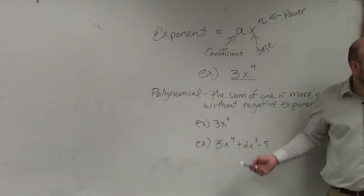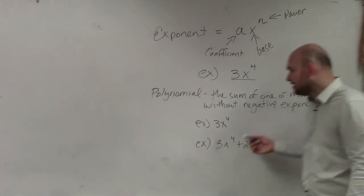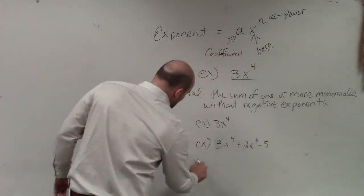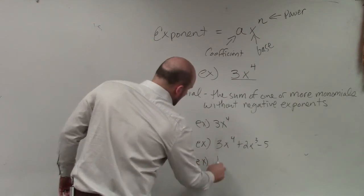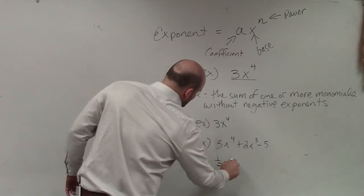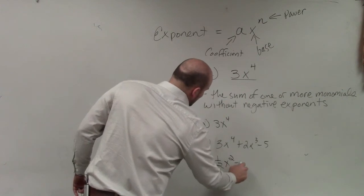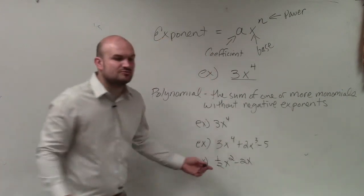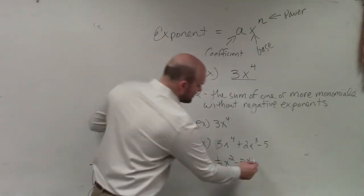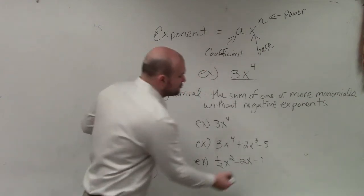It doesn't really matter how many terms it has, but you've got to make sure it's the sum. And even if it's negative, we can always rewrite one-half x squared minus 2x. Remember, we can always write a subtraction problem as an addition problem. So it doesn't matter if there's subtraction between the terms.